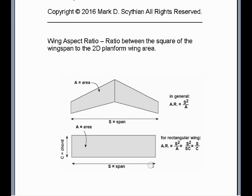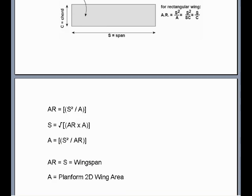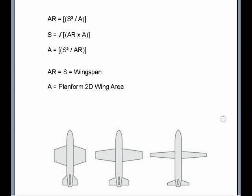With a rectangular wing, the mean chord is the same throughout. So that would just be the chord on a constant chord wing times the span for area, and then the wingspan squared divided by the area to obtain wing aspect ratio. Mathematically, the aspect ratio is defined as the square of the wingspan divided by the area. With this formula, you can also solve for other variables, such as the required wingspan or the required wing area.